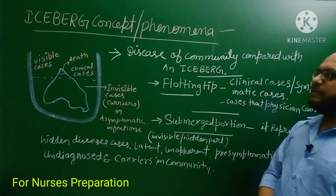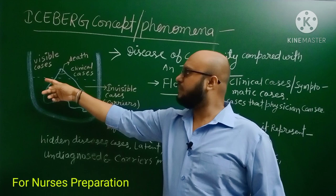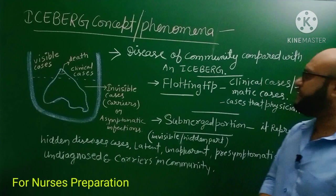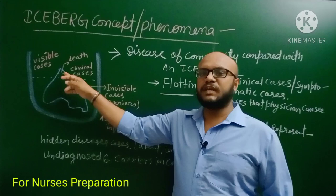In this concept, a floating iceberg is compared with the diseases present in the community. This is the submerged portion in the water, and this is the visible part of the iceberg, called the tip. This tip of the iceberg represents clinical cases, symptomatic cases, and the cases that a physician can see — simply, the diagnosed cases of disease.